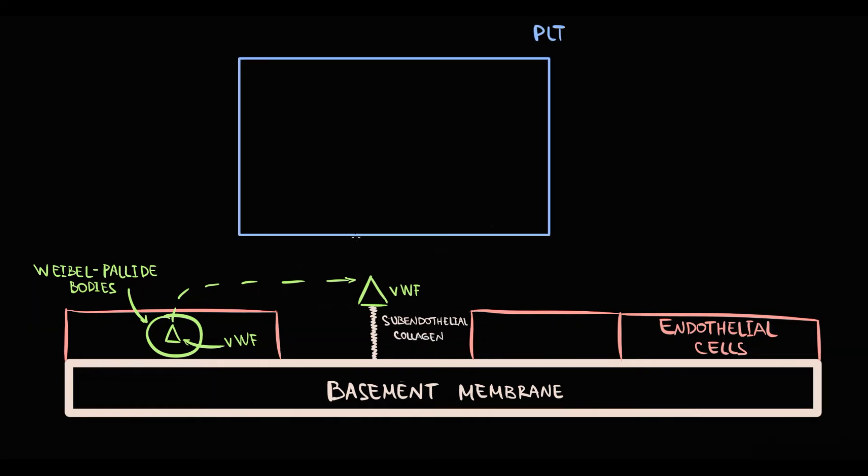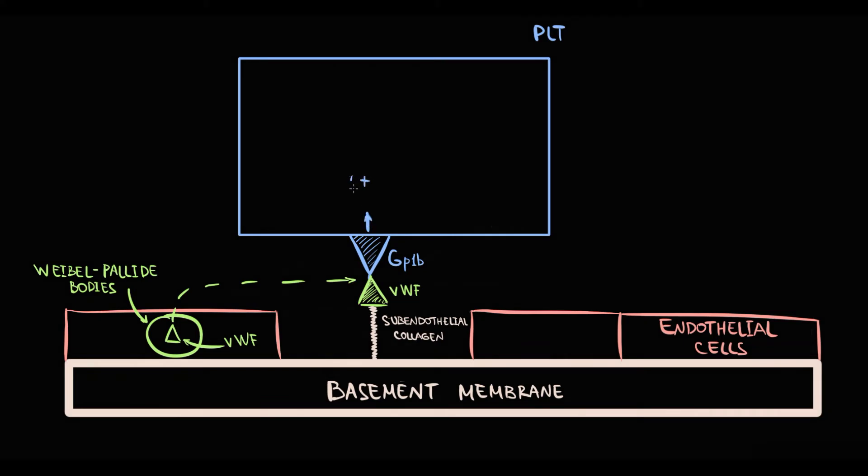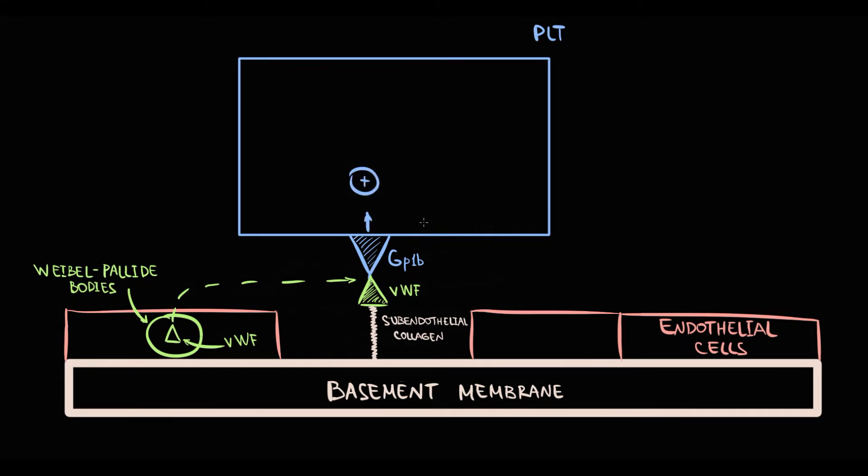After that, platelets come to the site of injury, and by the specific receptor GP1B, they bind to von Willebrand factor. And exactly this simple step called platelet adhesion. After the adhesion, platelets become activated. In response to this, they undergo shape change that results in their degranulation.